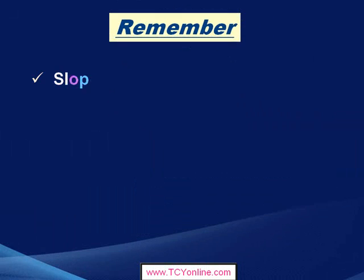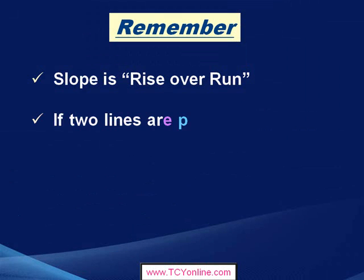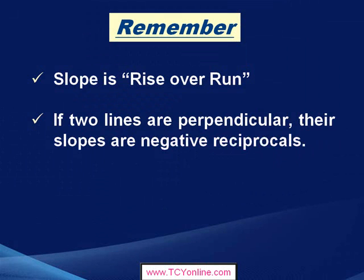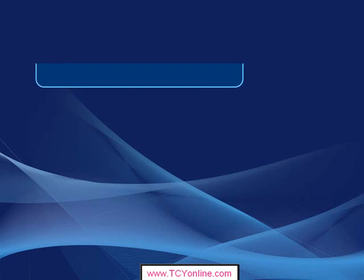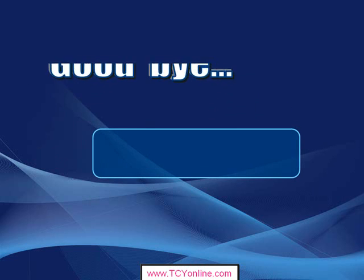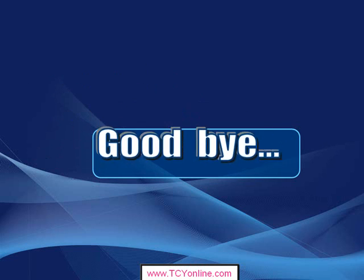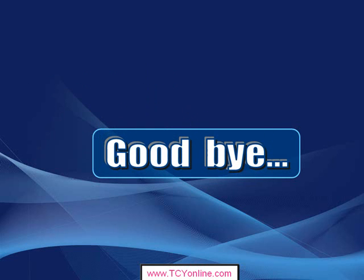So, always remember that slope is simply rise over run. And if two lines are perpendicular, then their slopes are negative reciprocals. Also, parallel lines have the same slope. With this, we come to the end of this topic. Goodbye and see you in the next session.